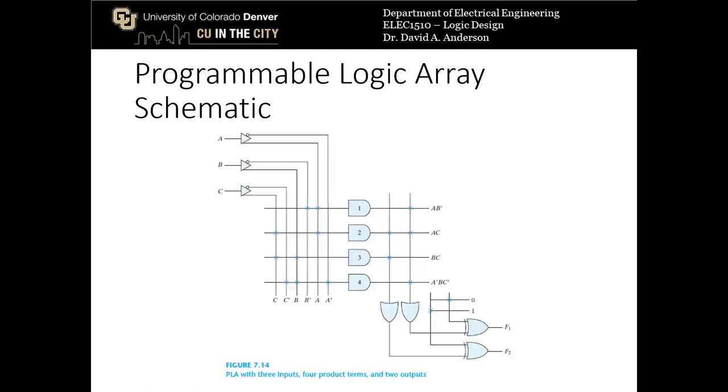The structure of a very basic programmable logic array is given here. Programmable logic arrays are basically hardware devices that are used to synthesize just about any type of logical function that you could want. We have input variables A, B, and C that then go into this type of inverter that is both a buffer and an inverter. It takes an input signal x and will output x prime and x. That's just a different type of symbol for a buffer and inverter that we haven't yet seen.